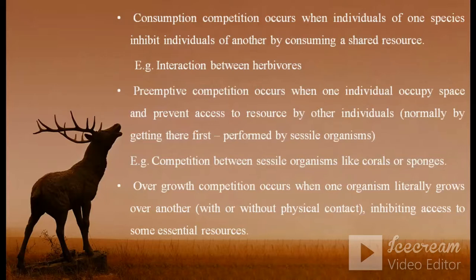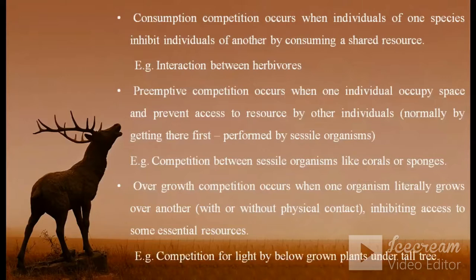Overgrowth competition occurs when one organism literally grows over another, with or without physical contact, inhibiting access to some essential resources. For example, a herb and a tree — if a herb is placed under a tree, then the tree canopy can cover the herb and inhibit it from getting light. So, it is a kind of overgrowth competition.